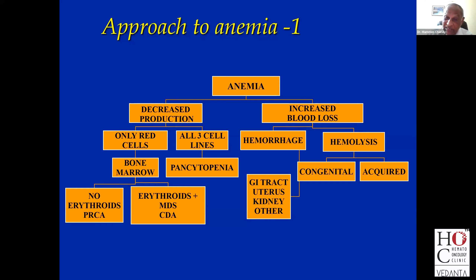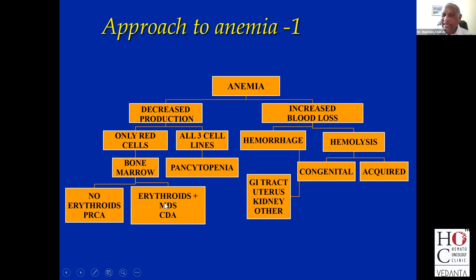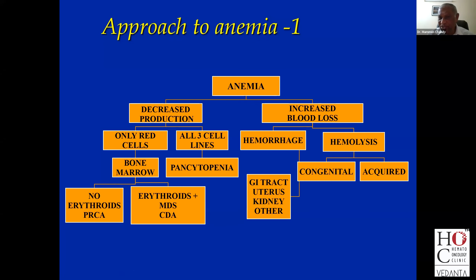Suppose you have anemia with a low retic count and the bone marrow is full of erythroid cells — that means these erythroid cells are not maturing and are not producing red blood cells. So the condition you think of is a myelodysplastic syndrome or a congenital dyserythropoietic anemia. This covers all you ever need to know about anemia. Patient has a low hemoglobin — ask yourself, is it decreased production or increased loss? If it's increased loss, only two causes: hemorrhage or hemolysis.